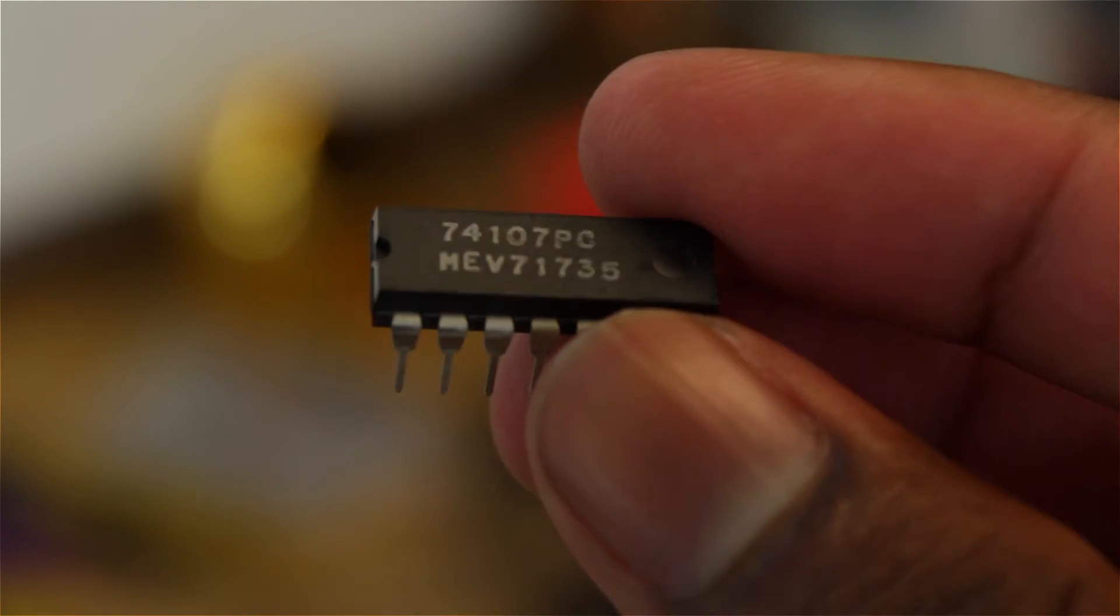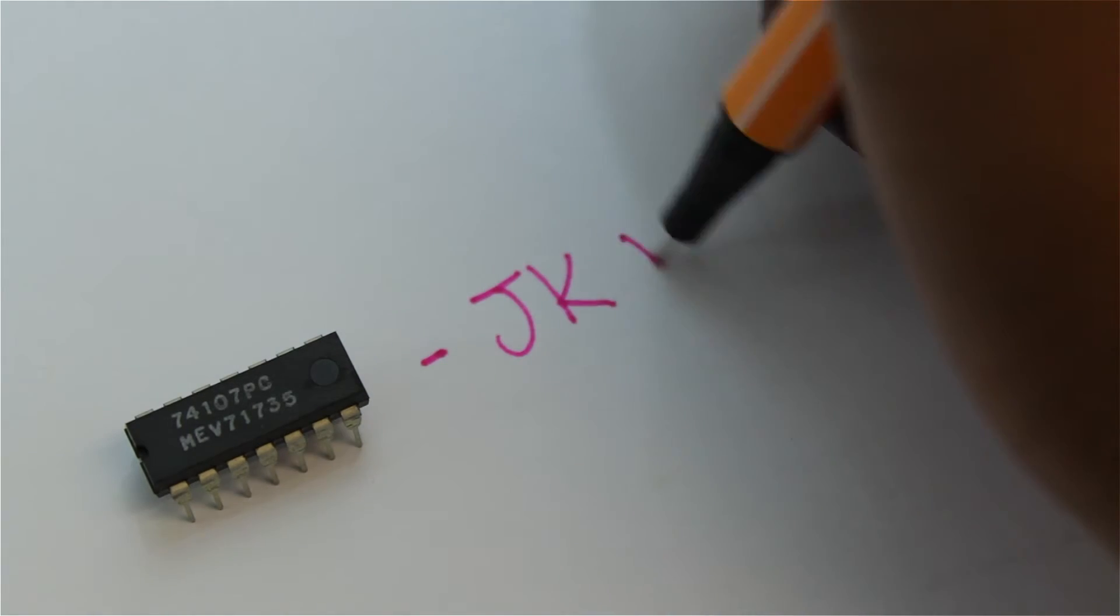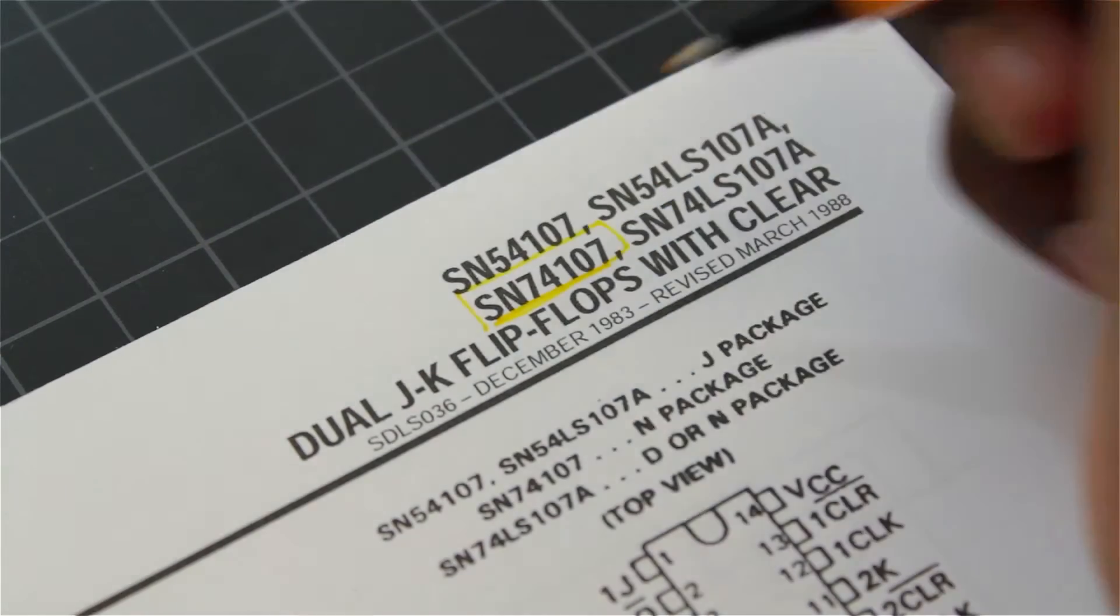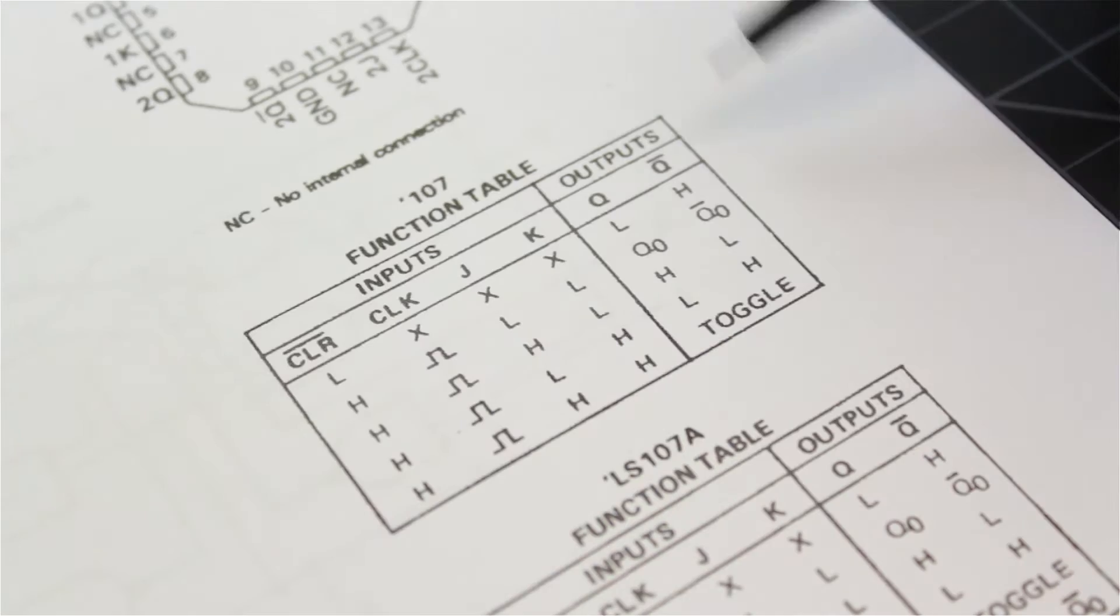The JK flip-flop solves this problem. This IC is a master-slave JK flip-flop. Looking over the datasheet, we can see the name of the IC, the pinout, and most importantly, the truth table.